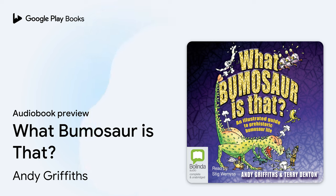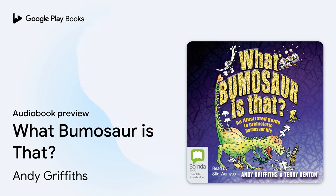Invertebuts. Life on Earth began in the seas with primitive bumteria during the pre-Crappian era. Over time, these early single-cheeked bums clumped together to form some of the first multi-cheeked invertebuts in the crapozoic-era oceans.